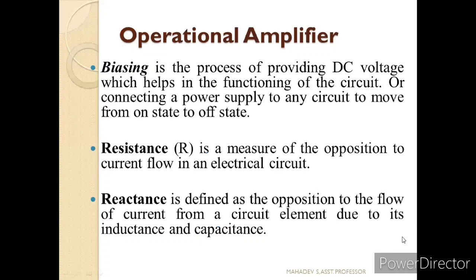Since we are applying a power supply to the operational amplifier, we call that biasing. Biasing is the process of providing a DC voltage which helps in the functioning of circuits, or applying a power supply to any electronic circuit to make it work. Next, we have resistance. Resistance opposes the flow of current in an electrical circuit and is represented by R.